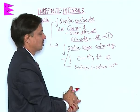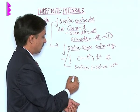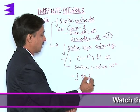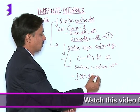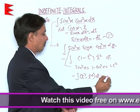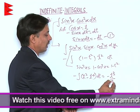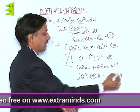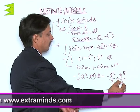This becomes minus of integration of product is t² minus t⁴ dt which become minus of t³ upon 3 and minus of that is plus because minus minus t⁵ upon 5.